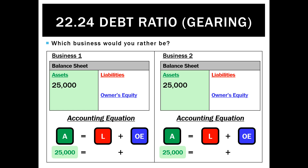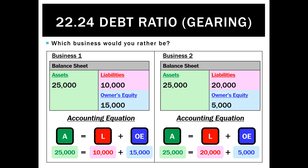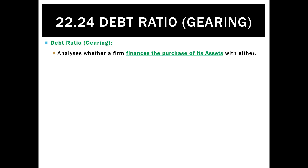So how would we look at this and which business would you rather be? Based on the assets, they're the same — they both own the same amount of assets. Where they're different is in their liabilities. Business A has half the liabilities of business B, meaning their equity is very different: business one has owner's equity of $15,000, but business two has only $5,000. The debt ratio helps us determine which business is less risky by analyzing whether a business finances its assets with external funds or debt versus internal funds or equity.